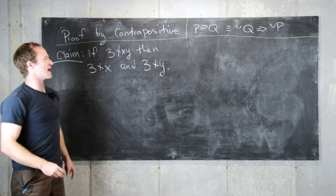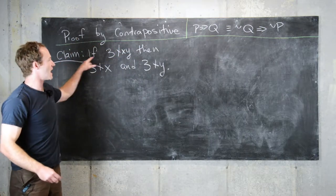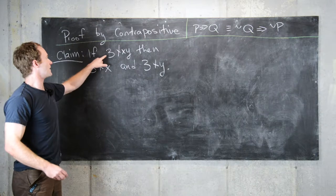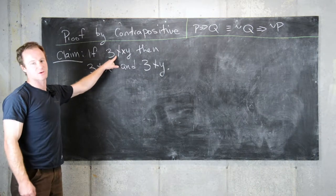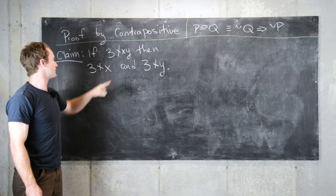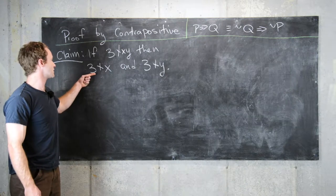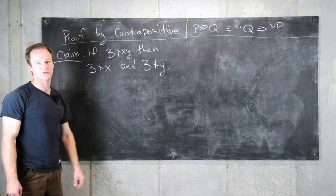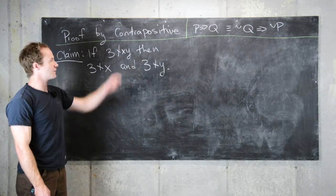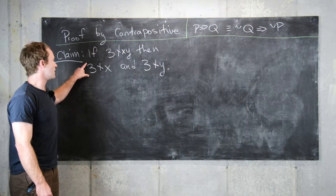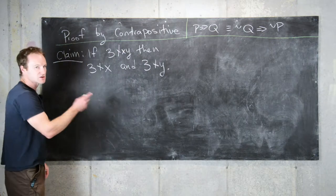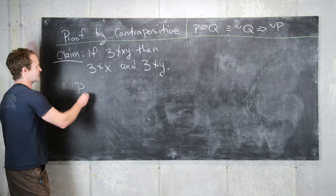In terms of that, our hypothesis is 3 does not divide XY—that would be the statement P—implies the statement Q, which is 3 does not divide X and 3 does not divide Y. If we want to use the contrapositive, we need to negate this. Let's lay all this out.